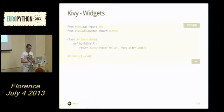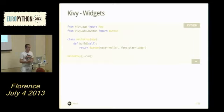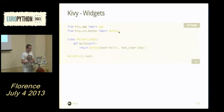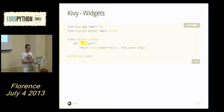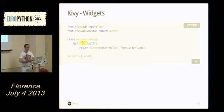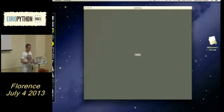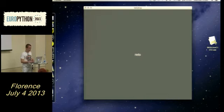Here's a very simple Hello World — the same as on the website. You import the App class, import a Button from the uix module, create your own class subclassing App, and implement a build function that returns your root widget. Here I'm creating a button, setting text, making the font size bigger using dp, then instantiating and running the application.